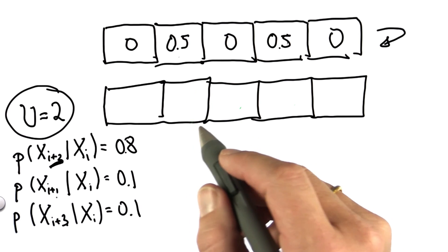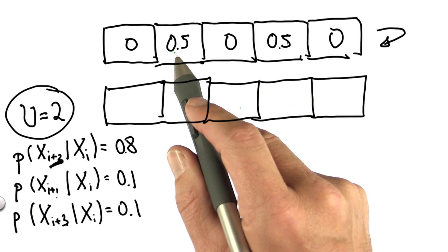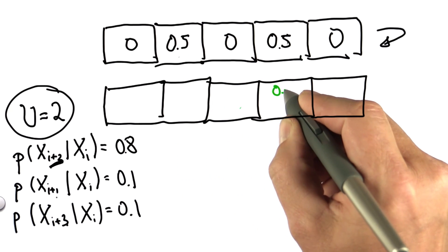And this is a pretty tricky question, which I'm going to answer in two phases. Let's just look at the 0.5 over here. 0.8 of that, which is 0.4, ends up over here.